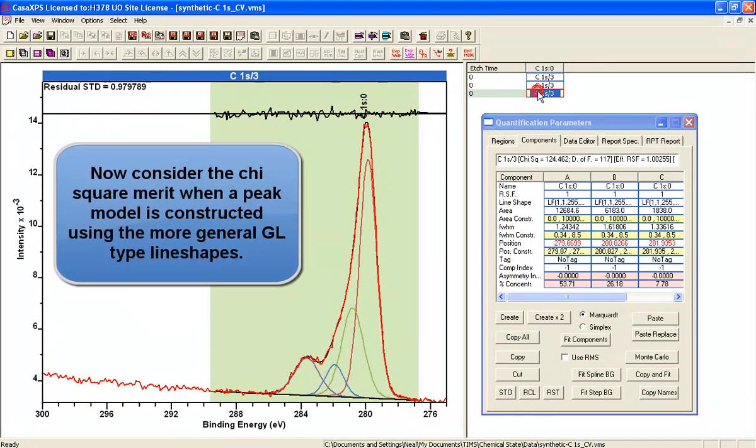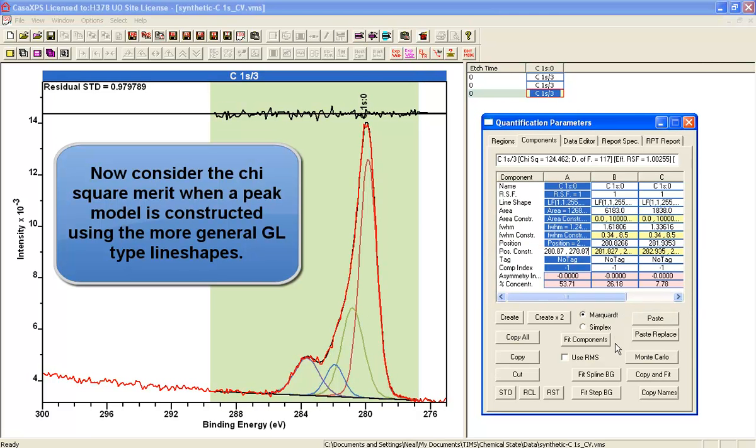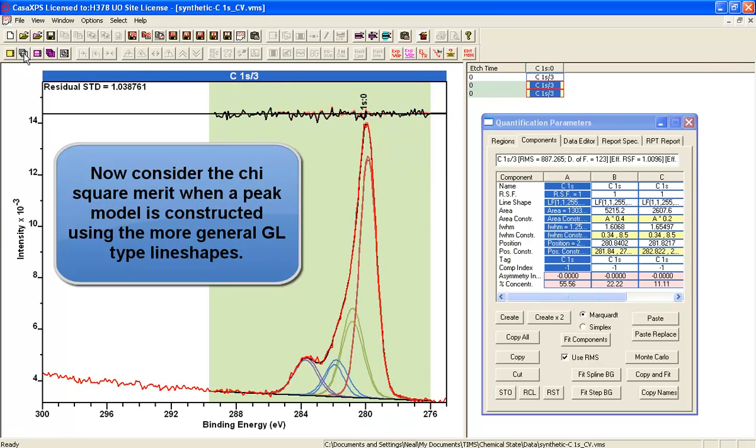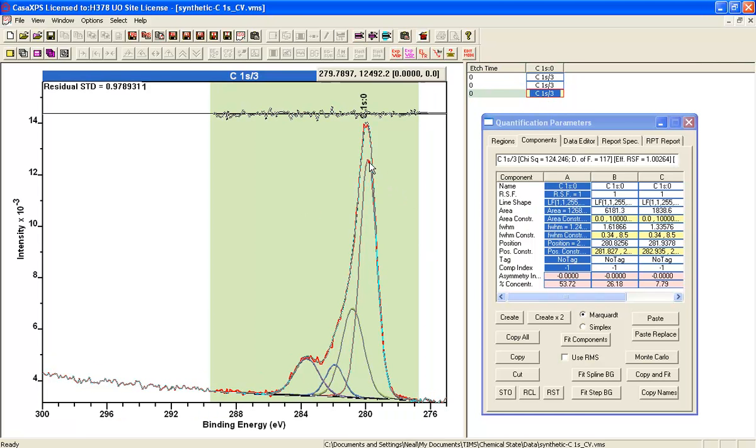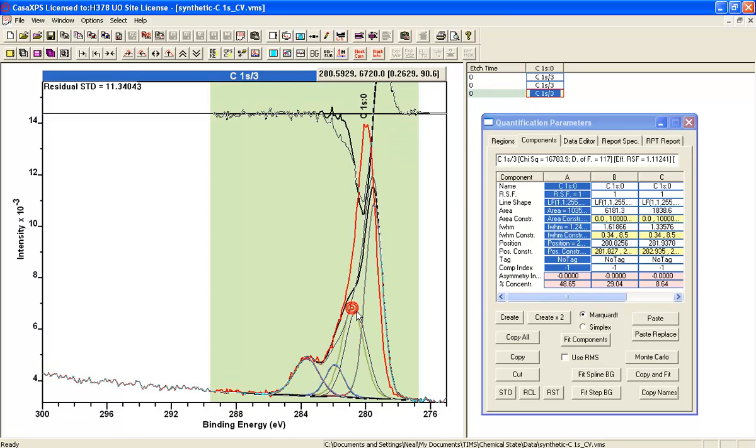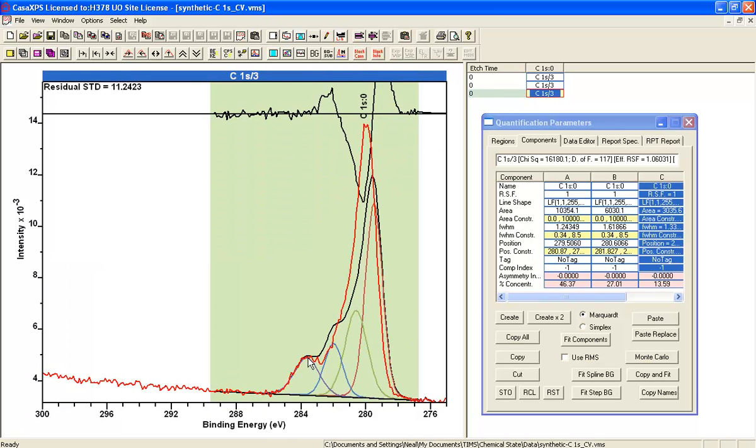So this should give you a cause for concern. And now if we set this problem up again, this time we're going to introduce not the LF line shape that was used to create the data, we're going to add a new line shape that will be a GL form. And that's not an uncommon line shape that's used in peak fitting.